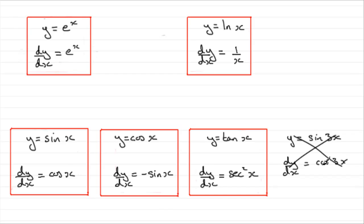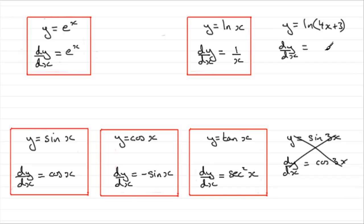What we're going to need to do later on is for functions like this, where we haven't just got x — where we've got a composite function — we're going to need to use the chain rule, which follows later. So if I had y equals the natural log of 4x plus 3, rather than just x, dy/dx does not equal 1 over 4x plus 3. It's more complicated than that. We need to use the chain rule to do things like this.